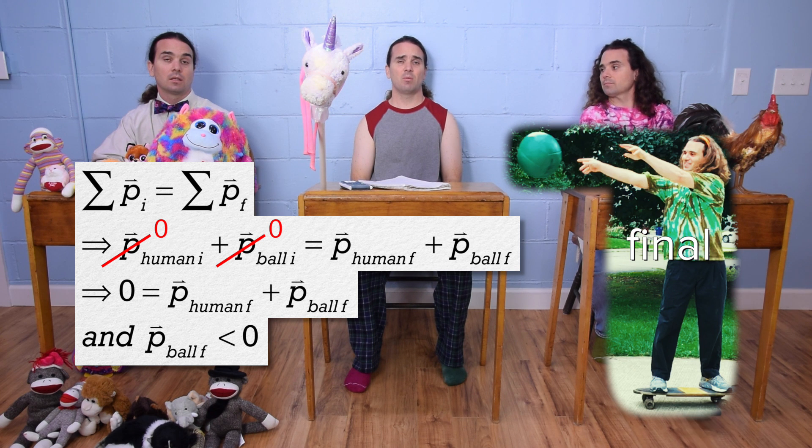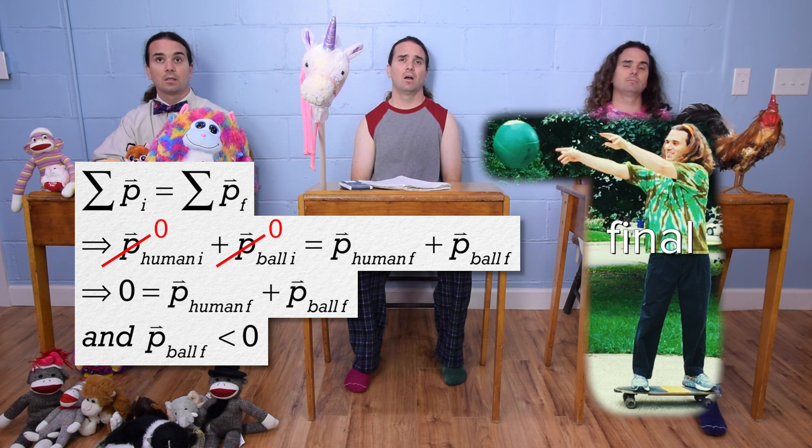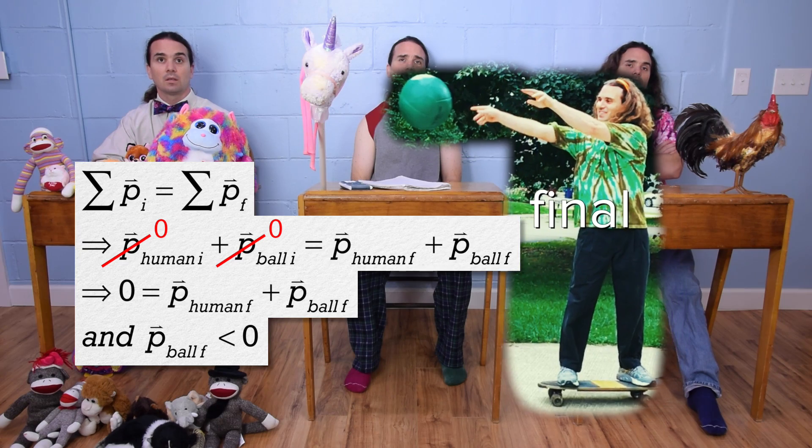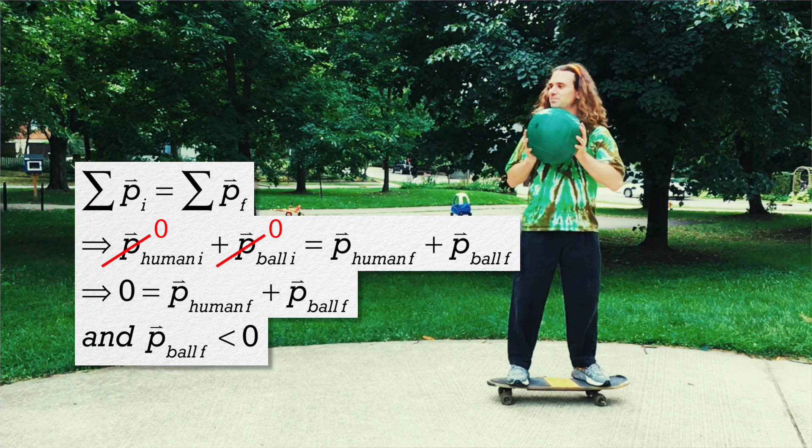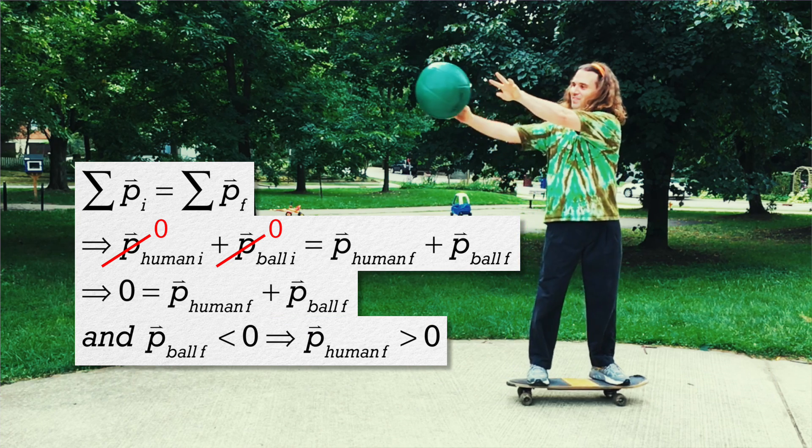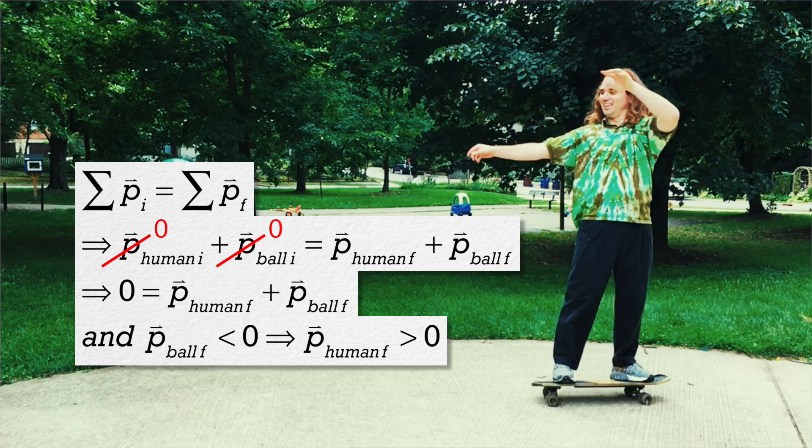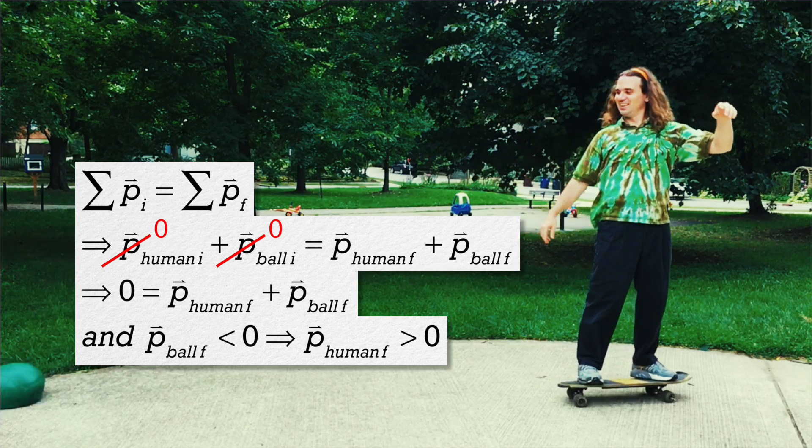Therefore, because the final momentum of the ball is negative, in order for the total final momentum to add up to zero, my final momentum after the explosion has to be positive. In other words, I have to move to the right.